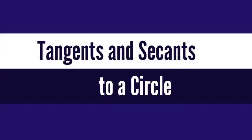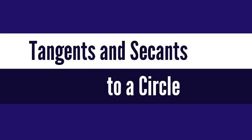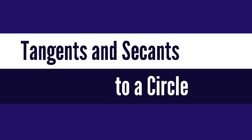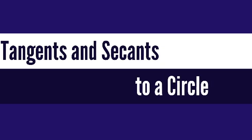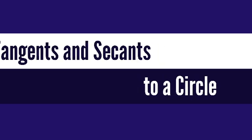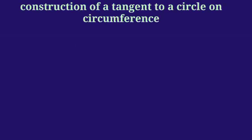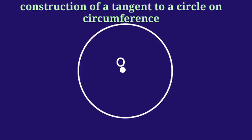Dear children, today we are studying construction of tangents to a circle — chapter: Tangents to a Circle, Class 10th. For a tangent at a point on the circumference, first draw a circle with center O, then mark a point P anywhere on the circumference.